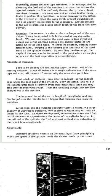These are the important parts of the machine: feed hopper, cylinder, leveler or conveyor, receiving trough, and retarder. The working principle of this machine: the seed to be cleaned are fed into the upper or feed end of the rotating cylinder. Since all indents in a single cylinder are of the same type and size, all indents lift essentially the same size particles.